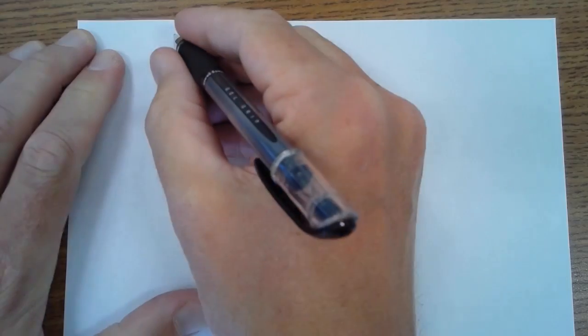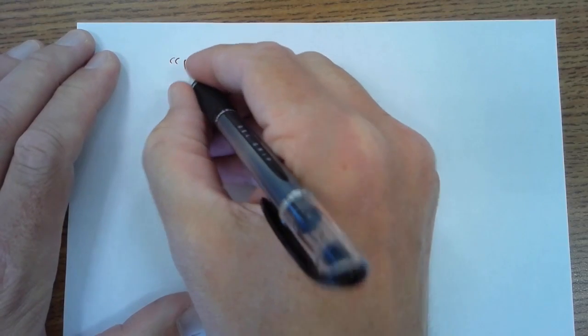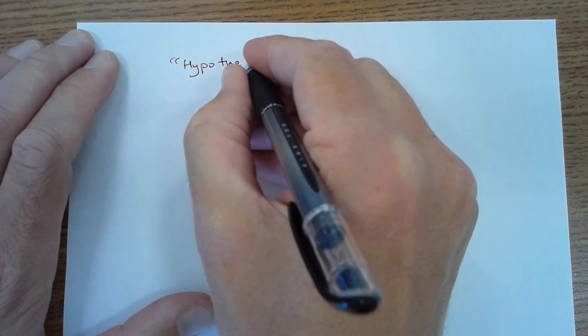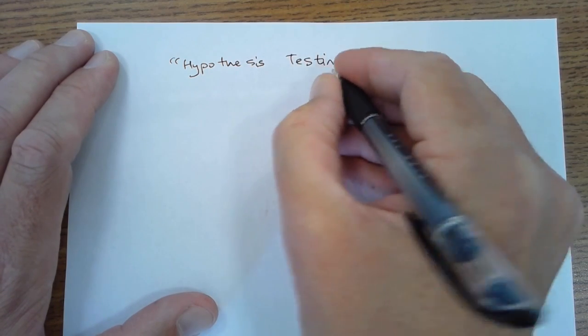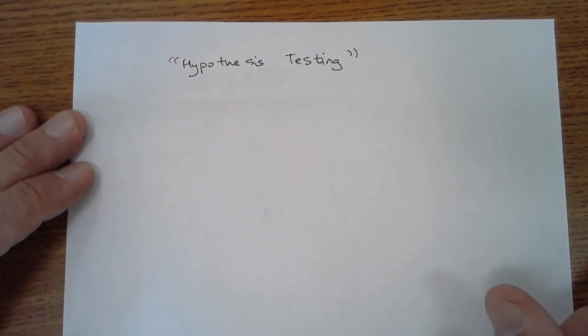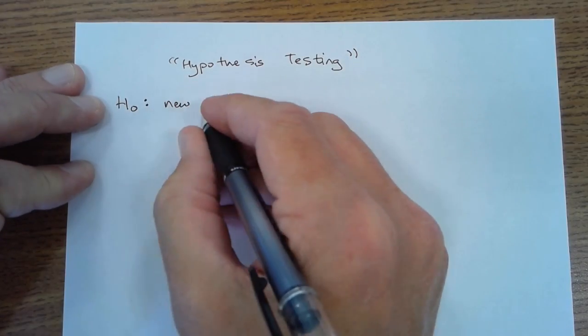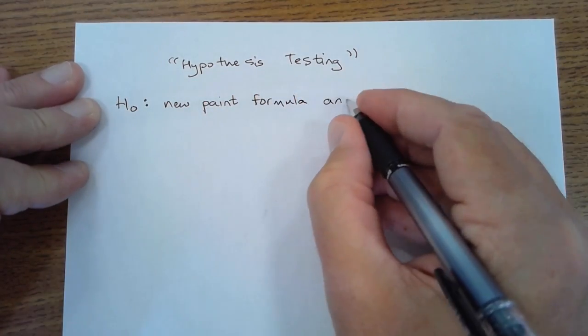Suppose a manufacturer of house paint has developed a new formula for their paint and they want to see whether it will weather better than the current paint formula that they use. In a classical hypothesis testing framework, they would have what are called two hypotheses, a null hypothesis and an alternative hypothesis.